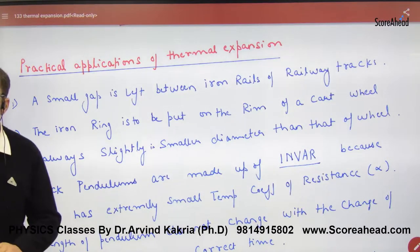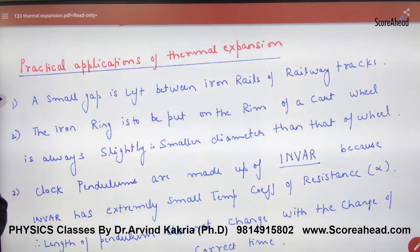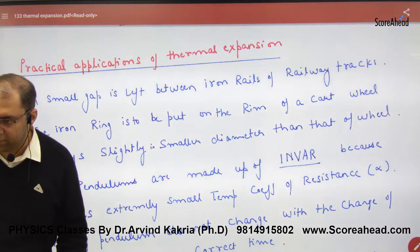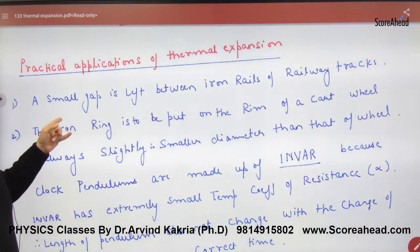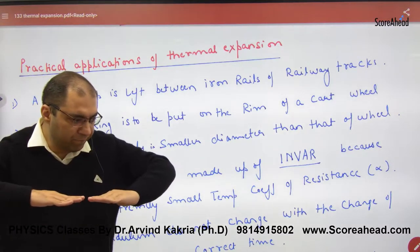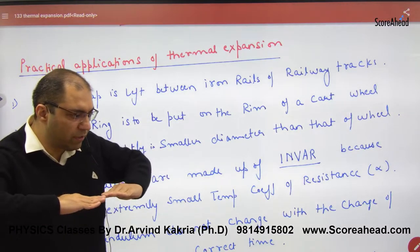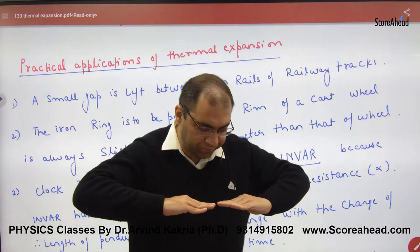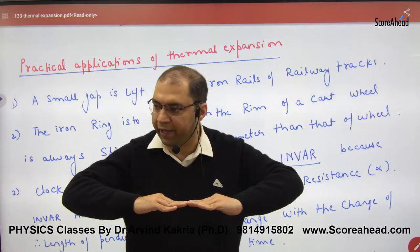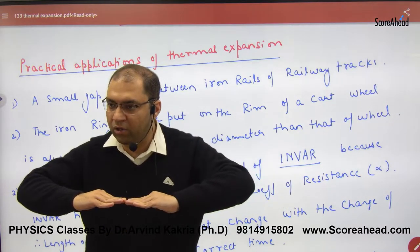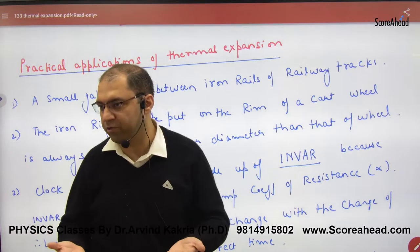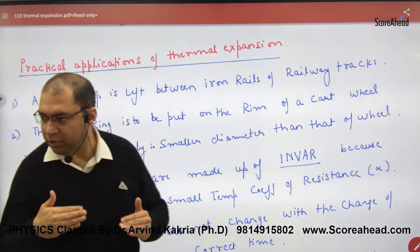Practical applications of thermal expansion: where do we see thermal expansion in routine life? First, a small gap is left between the iron rails of a railway track. Railway tracks are laid with gaps. Why? If railway tracks are in warm air, they will expand. If stuck and warm, the track will not bend — it will extend. So, we leave a gap to allow for expansion.